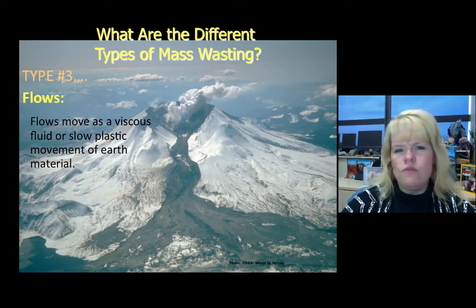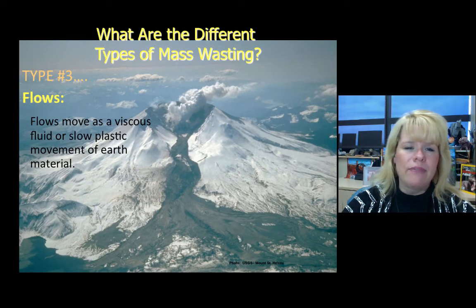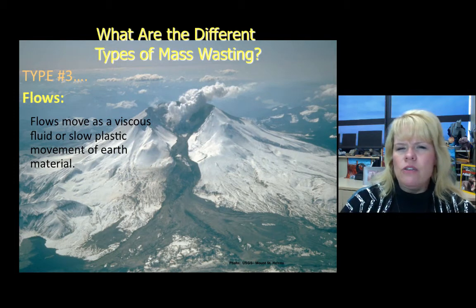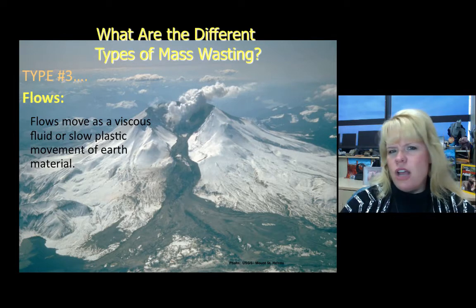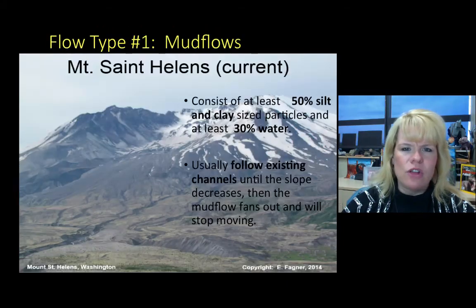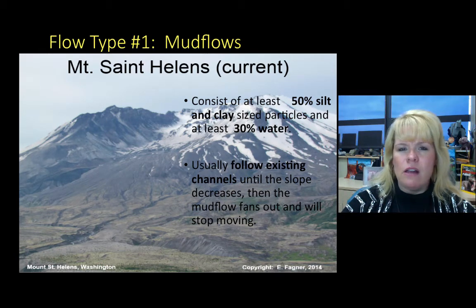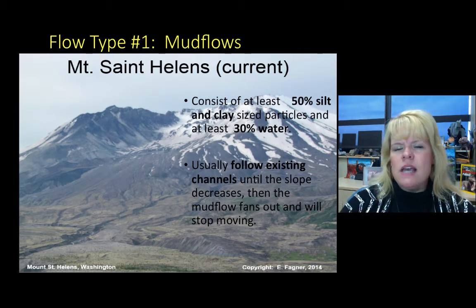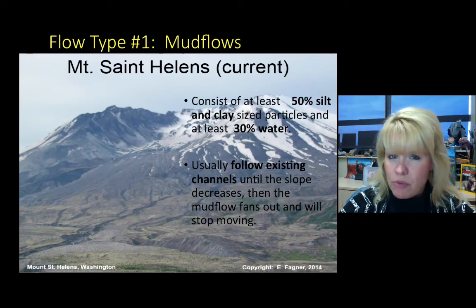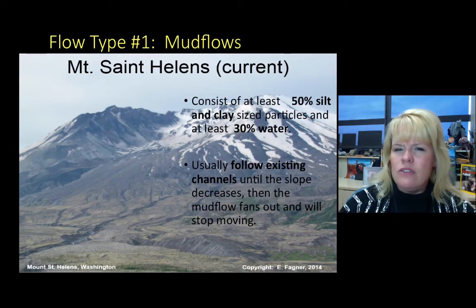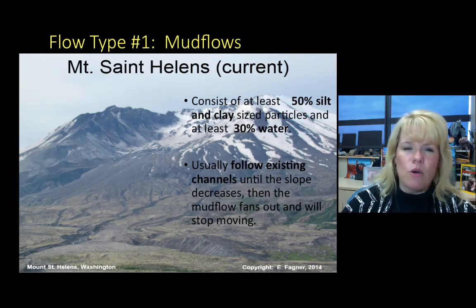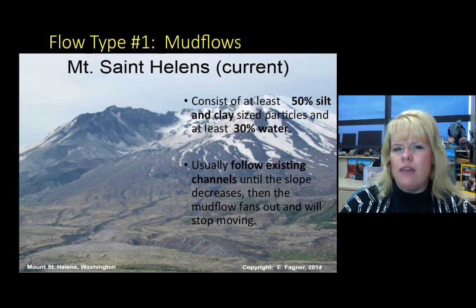There's another type of mass wasting called flows. Flows are different from falls and slides because they actually move as a material through the path of least resistance — at least mud flows do. The thickness or viscosity of the material affects how fast or slow it moves. Mount St. Helens was inundated by a mud flow known as a lahar in the 1980 eruption. For test purposes, a mud flow consists of 50% silt and clay particles and at least 30% water — that number can go up to 50%. The more water you have, the more fluid the mud flow will be; less water makes it more viscous. Mud flows usually follow the path of least resistance, like a river or a road.